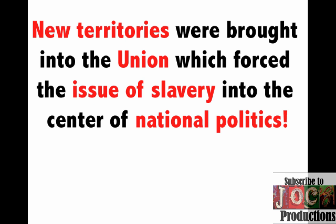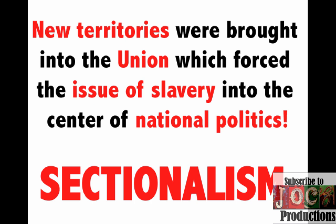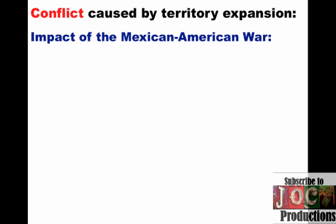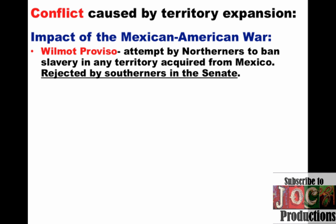However, new territories were brought into the Union, which forced the issue of slavery into the center of national politics. Throughout the 1840s and 1850s, you're going to see a tremendous rise in sectional tension between the North and the South. Conflict was caused by territorial expansion — for instance, the impact of the Mexican-American War. As soon as the war began, Northerners tried to pass the Wilmot Proviso, which would have banned slavery in any territory acquired from Mexico. This attempt was rejected by Southerners in the Senate and it doesn't go into effect.